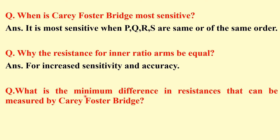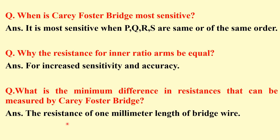What is the minimum difference in resistances that can be measured by the Carey-Foster bridge? The resistance of 1 mm length of the bridge wire is the minimum. Looking at the scale, 1 mm length is the smallest division, so the resistance corresponding to 1 mm of the bridge wire is the minimum difference in resistances that can be measured.